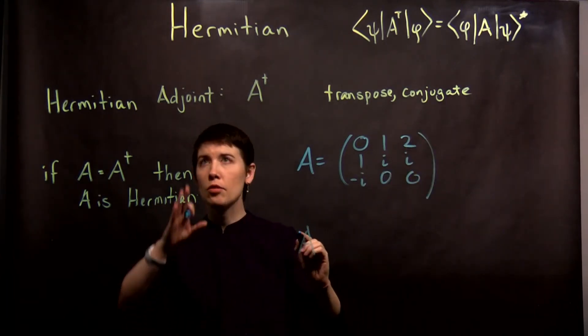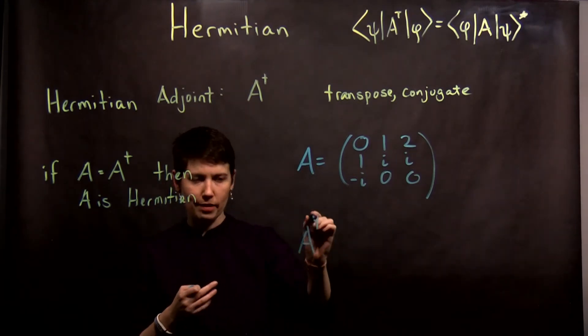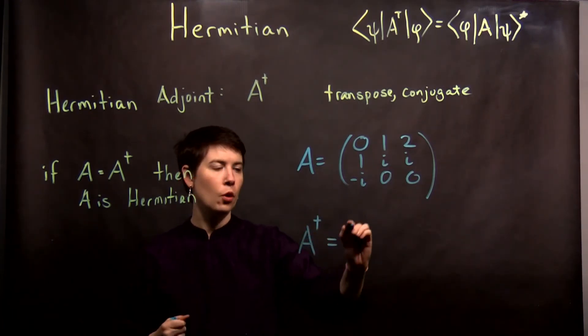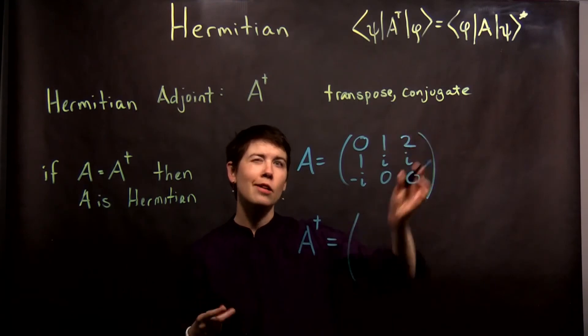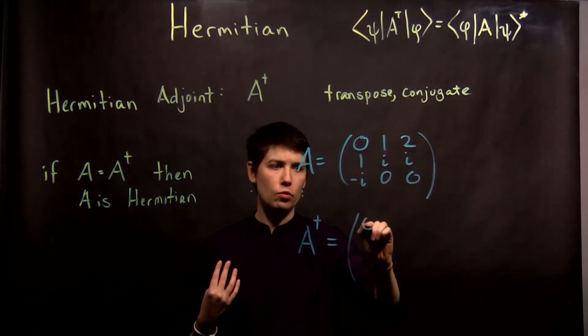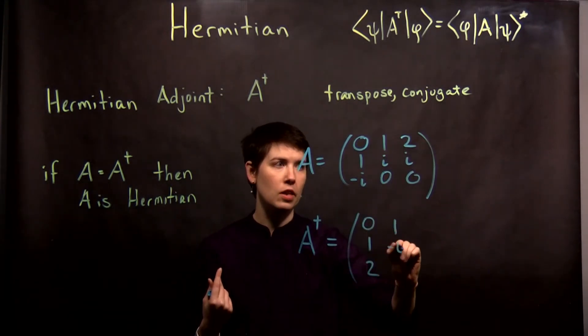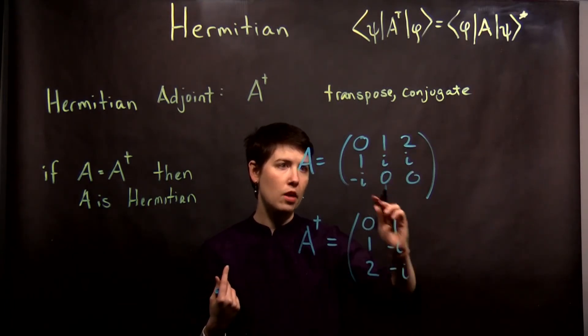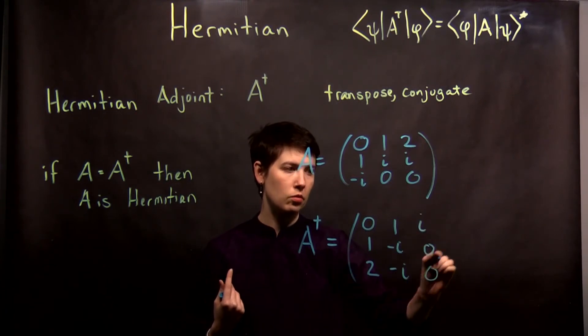So to get the Hermitian adjoint, or A dagger, it has this kind of little cross sign. So A dagger, we need to rotate and take the complex conjugate. So it's easy as long as it's a real number. So this now goes 0, 1, 2, 1, this becomes negative i, and then this becomes negative i, and then this is going to become positive i, 0, 0.